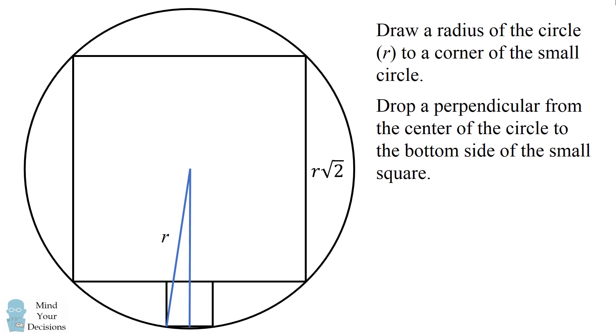So now we need to figure out some lengths of this triangle that we've just drawn. We'll write s for the small square's side length. The other leg of the triangle will be s over 2 because it's equal to half of the small square's side.